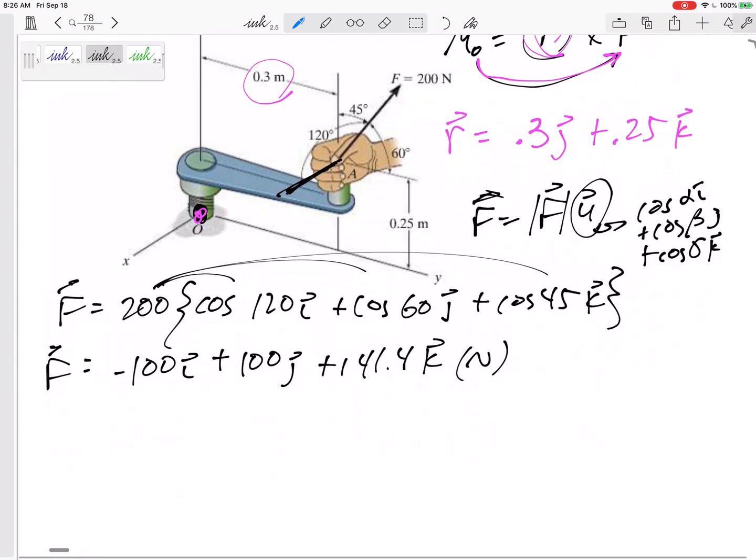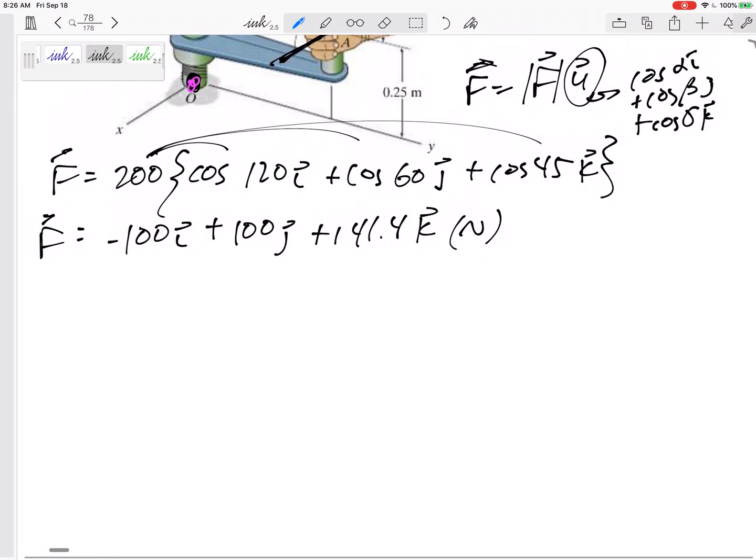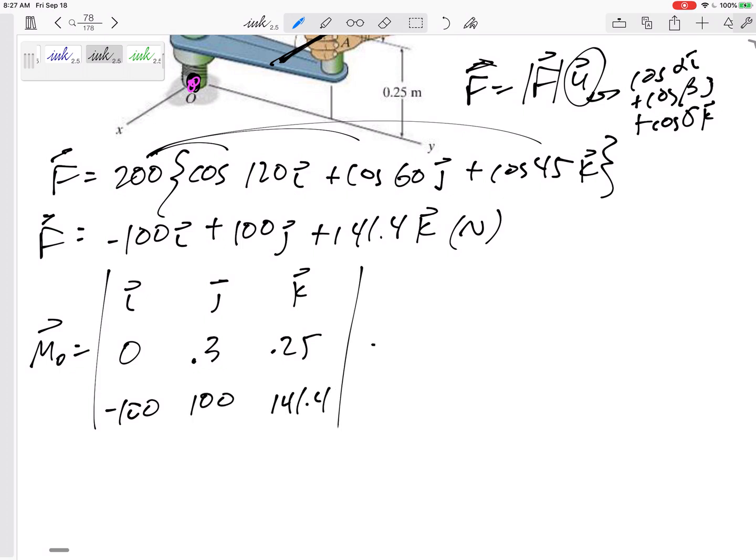Put a check mark because now I've got my force written. Now I can do my cross product: M equals r cross F. So I do the i, j, k across the top, the r: zero - and don't forget these zeros as kind of placeholders when you don't have something there - and then the force: negative 100, positive 100, 141.4.